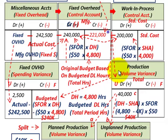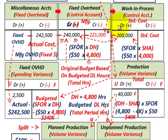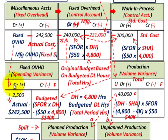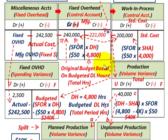So we've accounted for the total variance. Looking at debits and credits: work-in-process at $200,000 plus the production volume variance debit of $40,000 equals $240,000. Adding the spending variance debit of $2,500 brings the total debits to $242,500 — matching the actual cost. That was the production volume variance as a whole; now we can break it down.